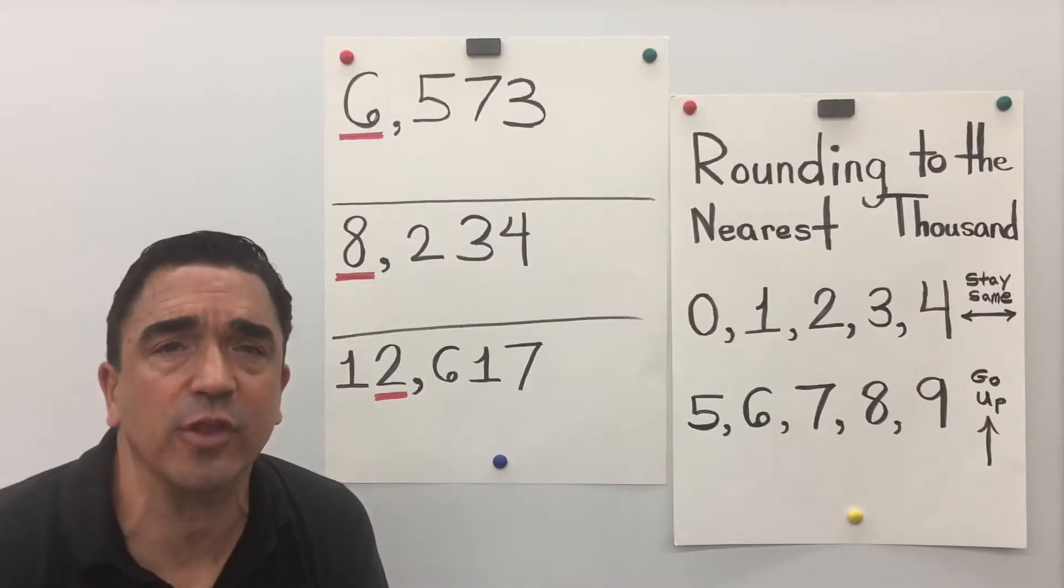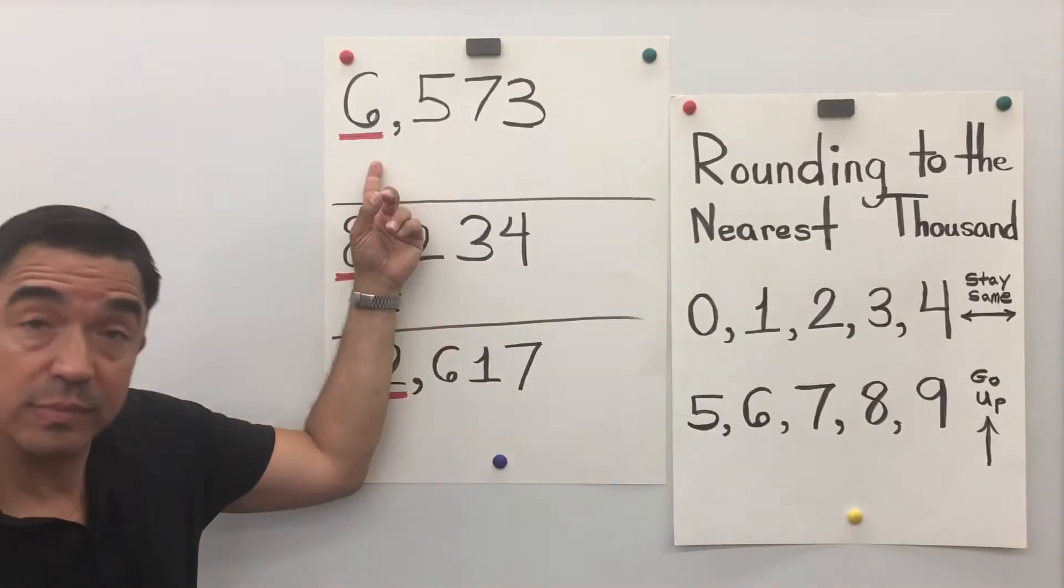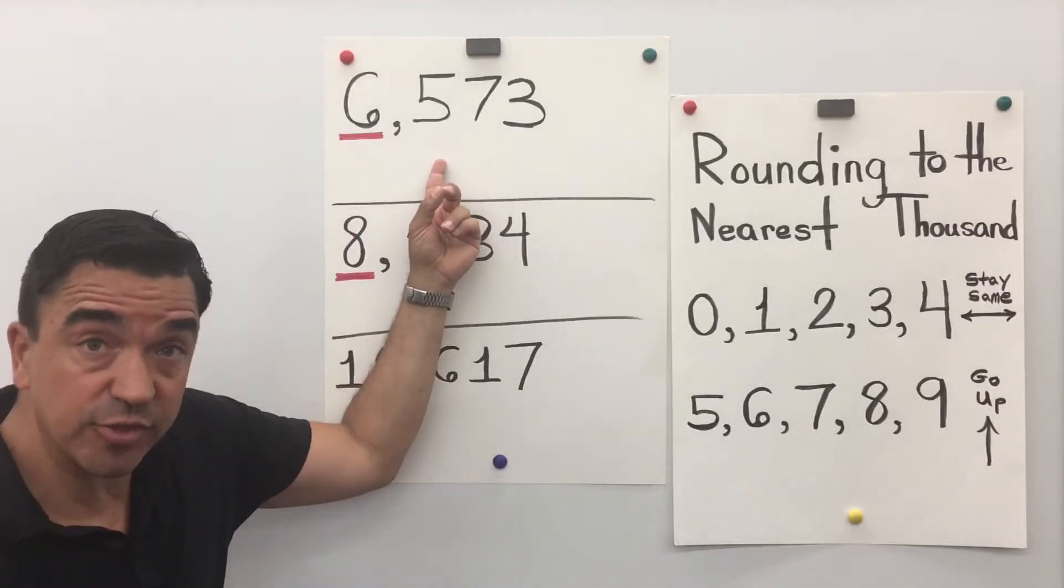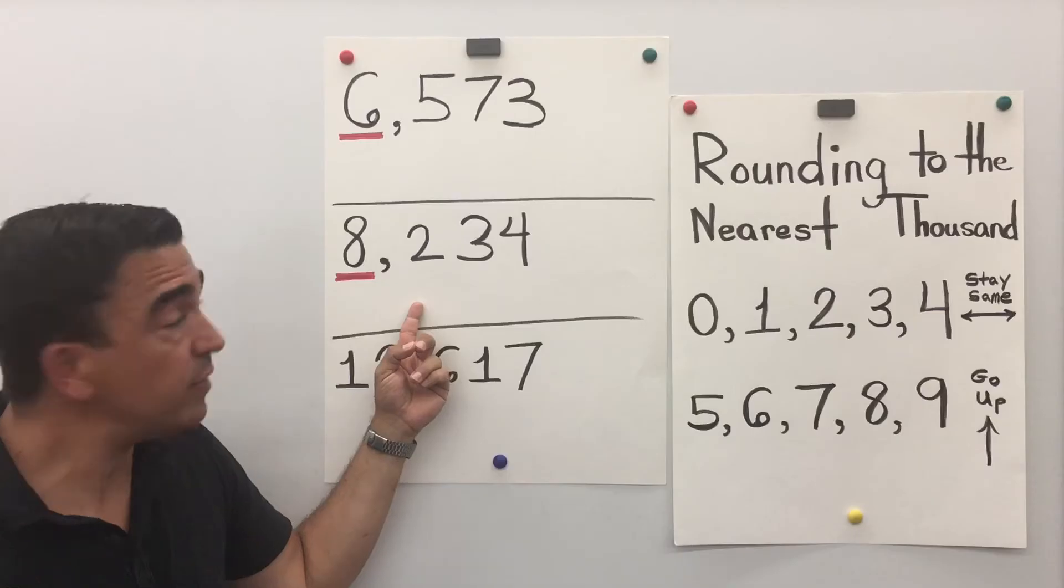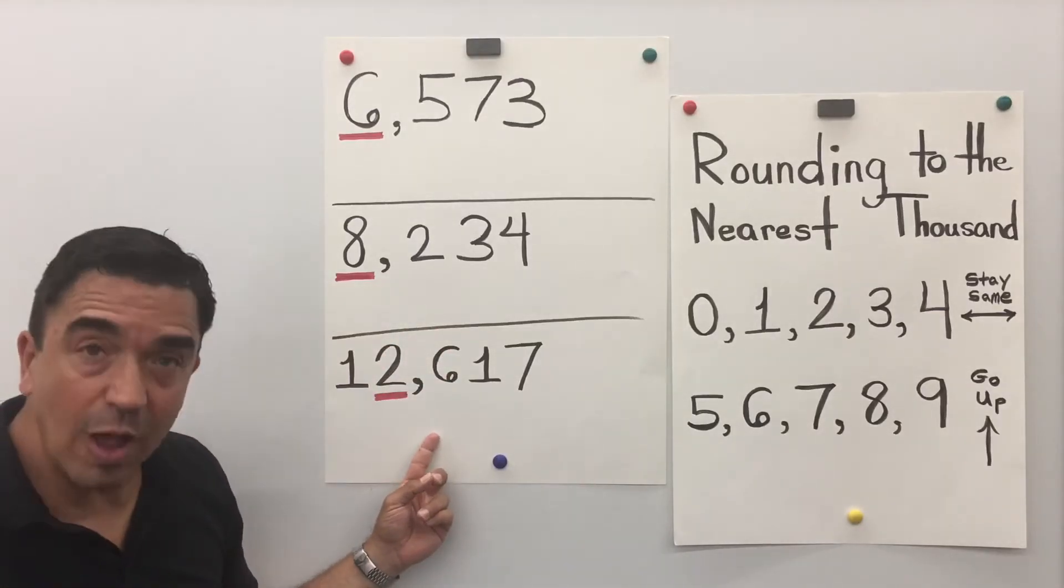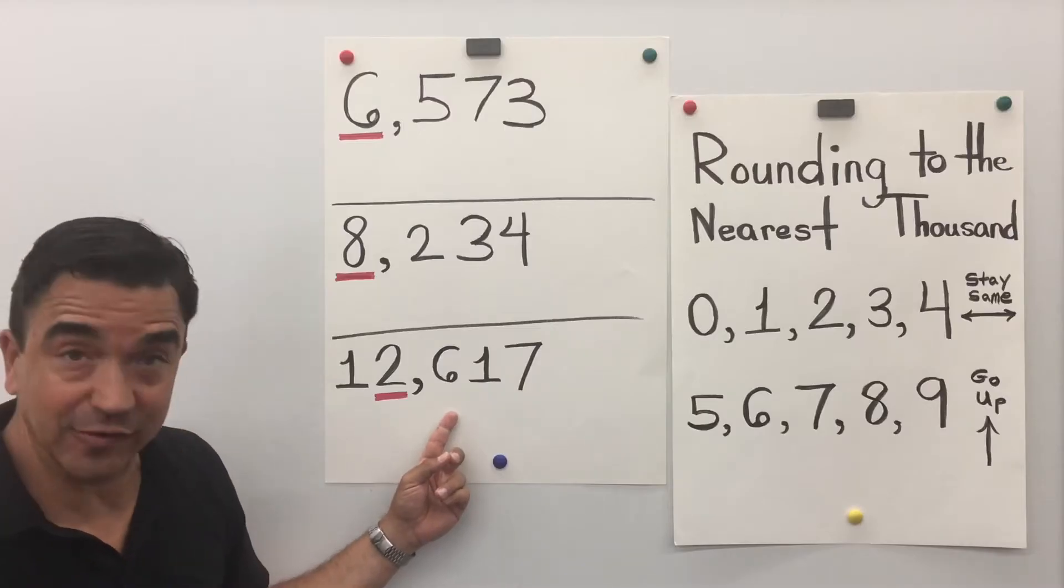Let's look at the three problems on the board: 6,573, 8,234, 12,617.